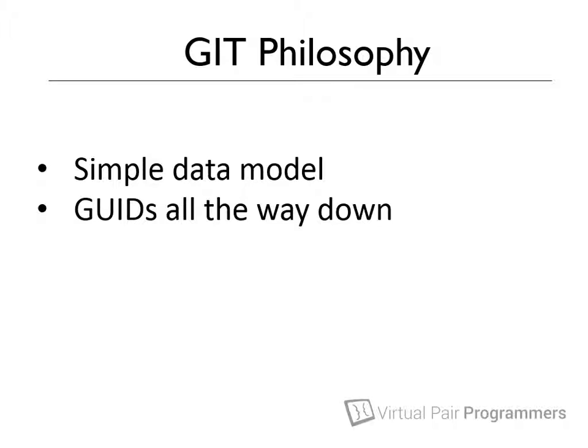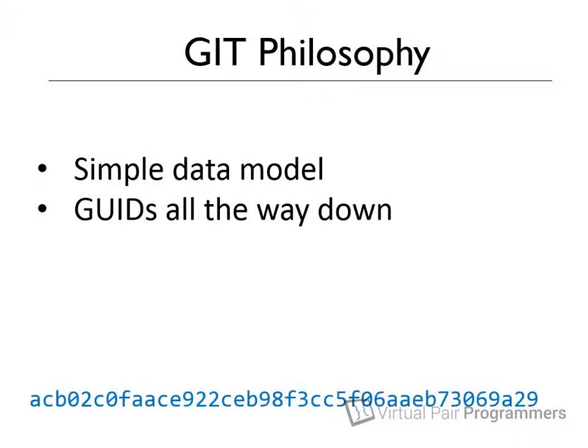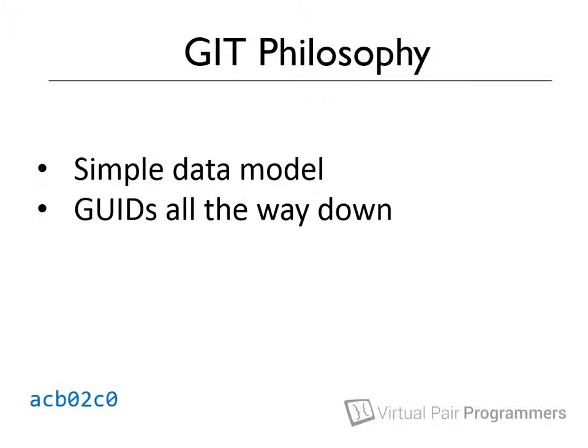Don't worry if all of that doesn't make any sense to you yet — it will become clear when we look at some concrete examples later on. Here's an example of what a full SHA1 hash looks like. In practice, these are often abbreviated to show just the first seven characters. The basic thing to understand is that file versions get given these hash names inside Git so that they don't clash with each other and can be found very quickly.